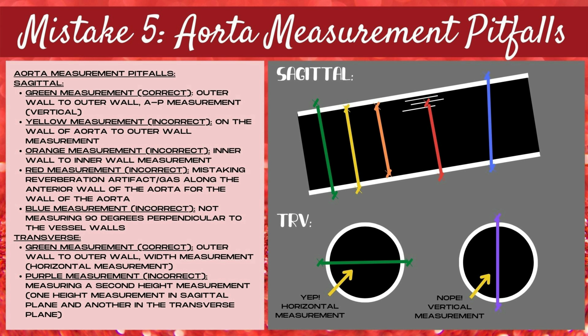The orange measurement is also incorrect — this is an inner wall to inner wall measurement, which also shortens the height of the aorta. The red measurement is also incorrect, mistaking reverberation artifact or gas along the anterior wall of the aorta for the actual wall, which artifactually shortens the height. The blue measurement is also incorrect; the calipers are not placed 90 degrees perpendicular to the vessel walls, which will artifactually increase the size of the aorta height.